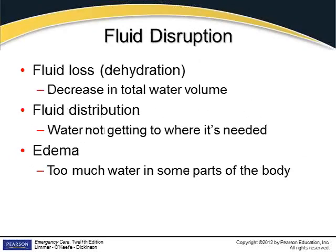Fluid disruptions include fluid loss or dehydration — an obvious decrease in total water volume — which comes from a variety of reasons. The biggest causes of dehydration are excessive vomiting and excessive diarrhea, which cause the body to lose an insane amount of water all at once. You can also become dehydrated from simply not drinking, and still losing fluid through urination, exhalation, and the skin.